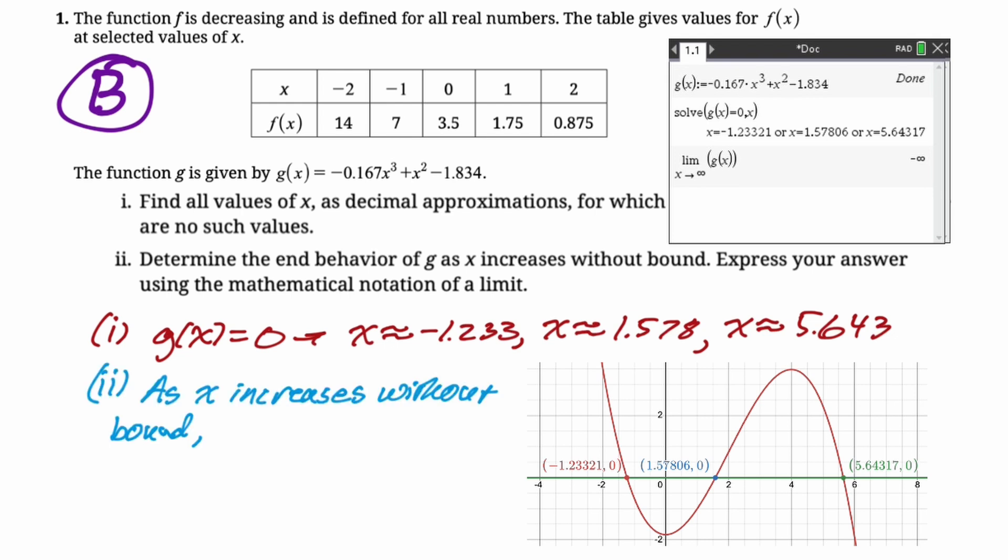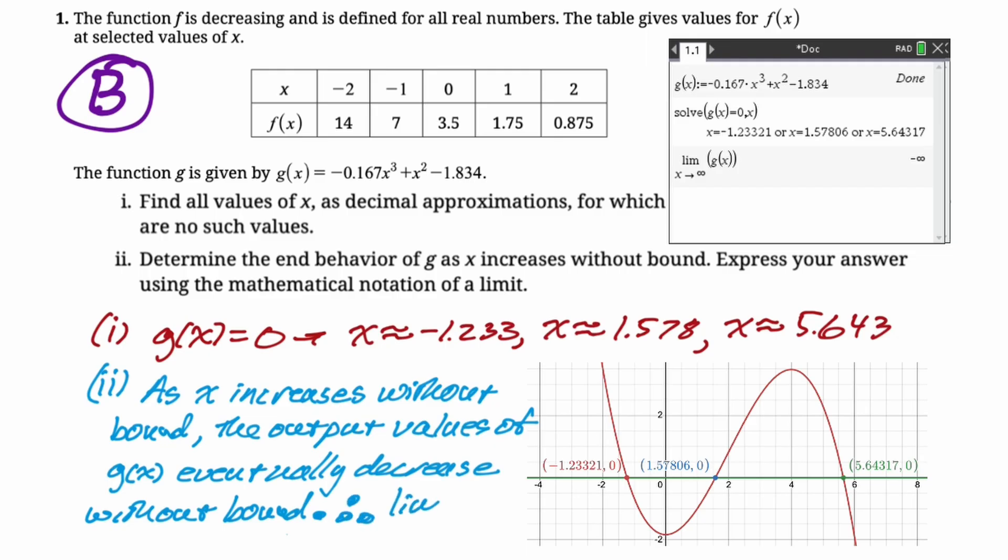So now we need to write this up. So I'm not going to make you watch me write everything. I'll just read it. As x increases without bound, so I'm just repeating what was in the question, the output values of g(x) eventually decrease without bound. Now that's not using limit notation. So now we need to write our limit notation. So I'm going to say, therefore, the limit as x approaches infinity of g(x) is equal to negative infinity. I think that's really the only part you need on that. But I'm not sure because the answer keys they put out always have that first sentence thing. So we're always looking to try to get a perfect score on this thing. So we included it.